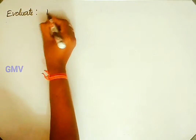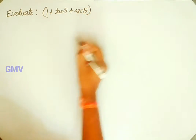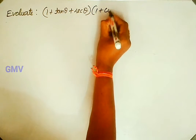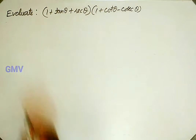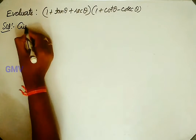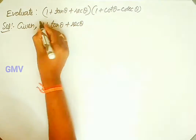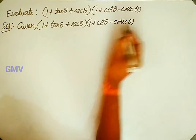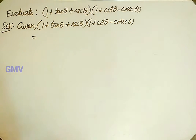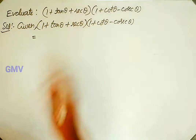See the next problem: evaluate (1 plus tan theta plus secant theta) into (1 plus cot theta minus cosecant theta). In the solution, take the given as it is. In trigonometric problems, in most cases you have to convert tan, secant, cot, cosecant in terms of sin and cos. So I am converting tan, secant, cot, cosecant in terms of sin and cos.